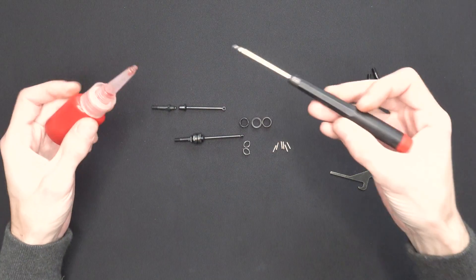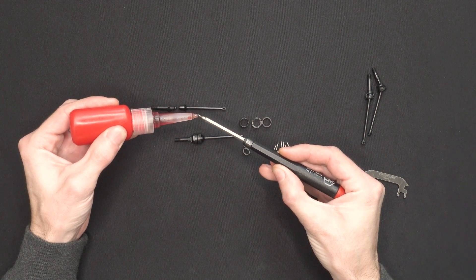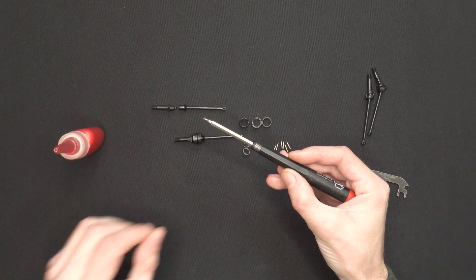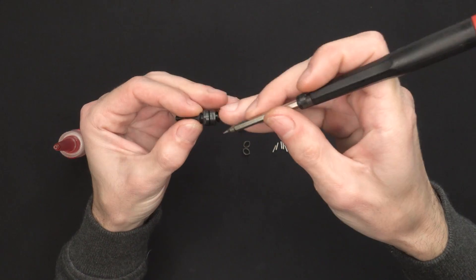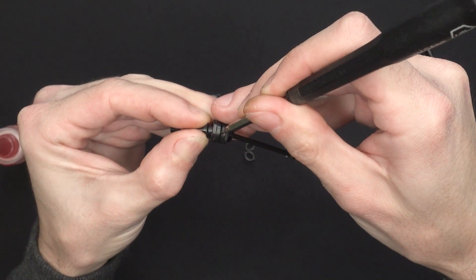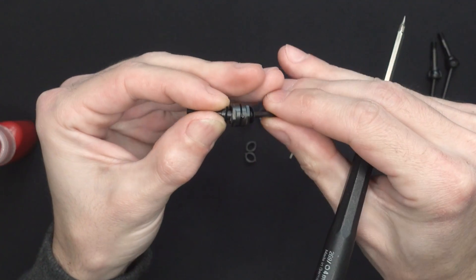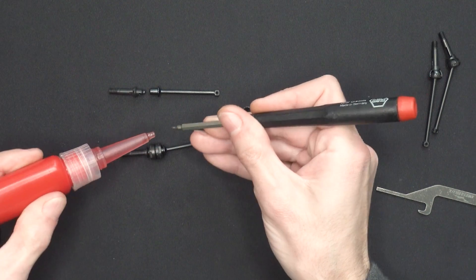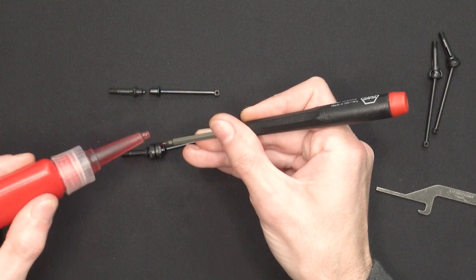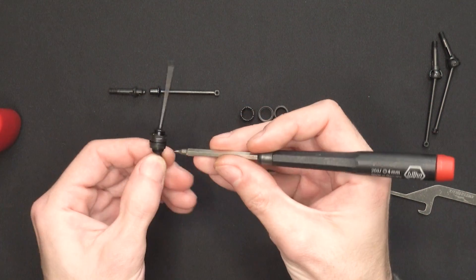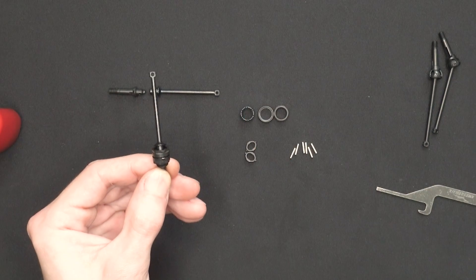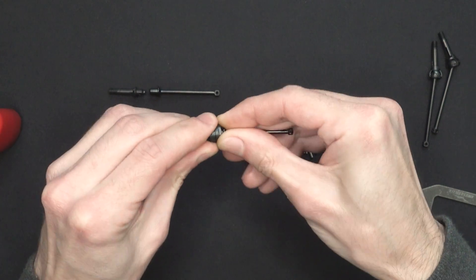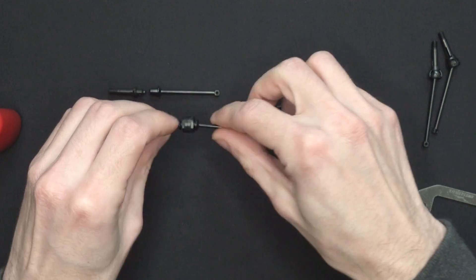To do so, grab some thread lock and a very thin either screwdriver or a toothpick or whatever is laying around that can do the job. And carefully drop a very tiny amount of thread lock onto the thread. I'm going to do this on two opposite sides. And we can put them together like so.